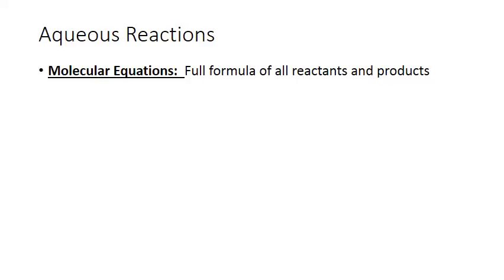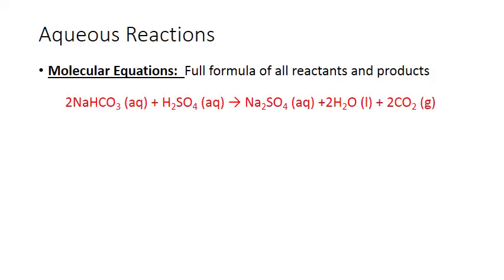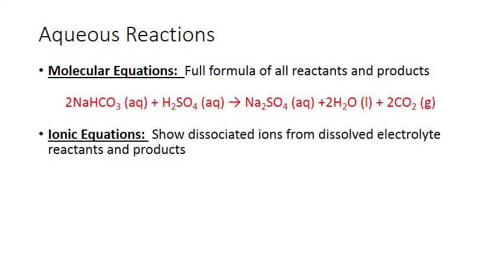There are a wide variety of reactions that take place in water, and there are two common ways of writing chemical equations for aqueous reactions depending on the types of substances involved. One of the most common ways is called the molecular equation, which is the type we've been using up till now, where we show the full formula of all reactants and products. In an ionic equation, in contrast, we show the separated ions from electrolyte reactants and products that are dissolved in water — those that have (aq) following them.